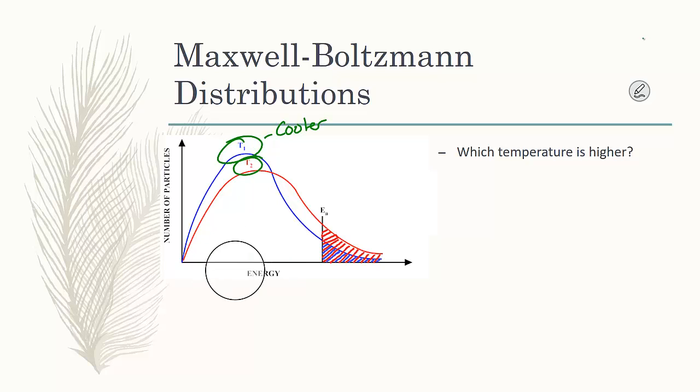One of the ways we can note this is if you look at temperature two, temperature two has more particles after the activation energy. Meaning temperature two has to be warmer because these particles have enough energy to overcome the activation energy.